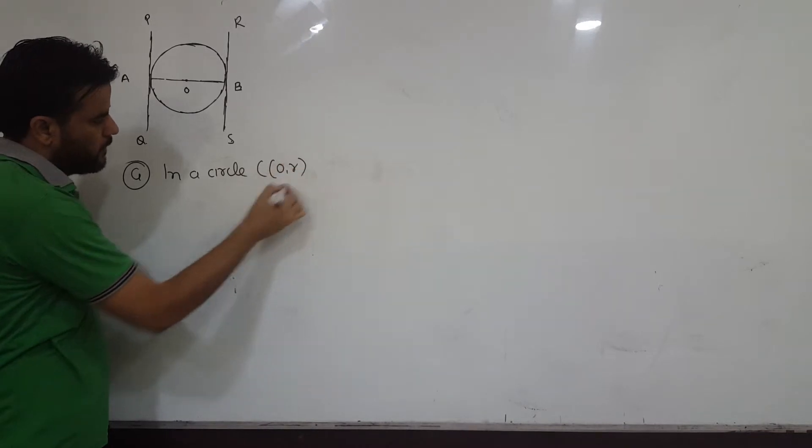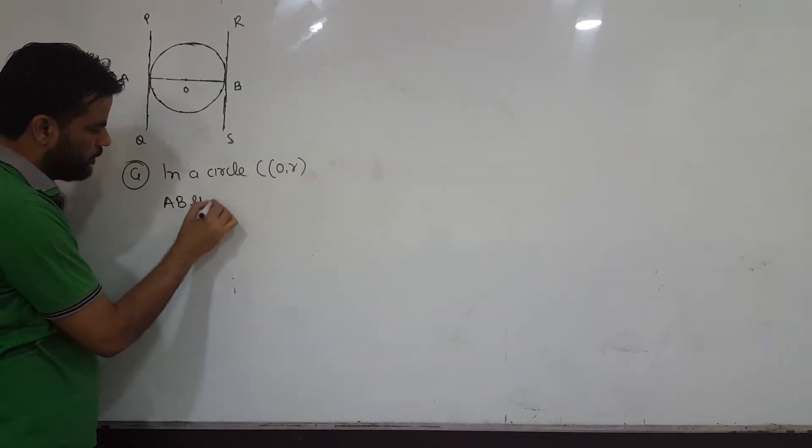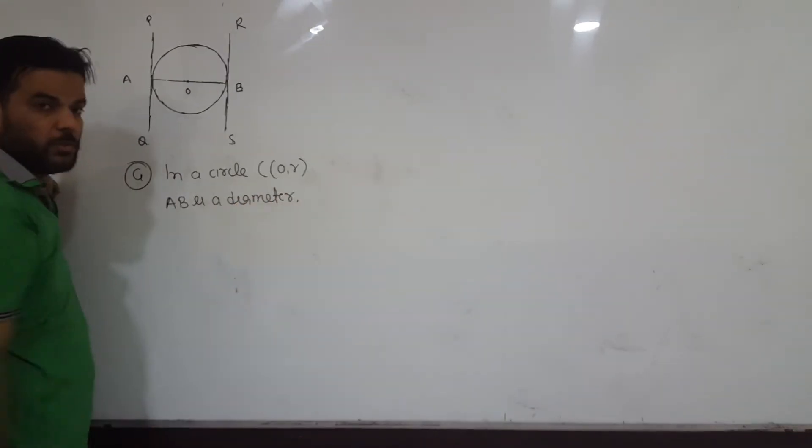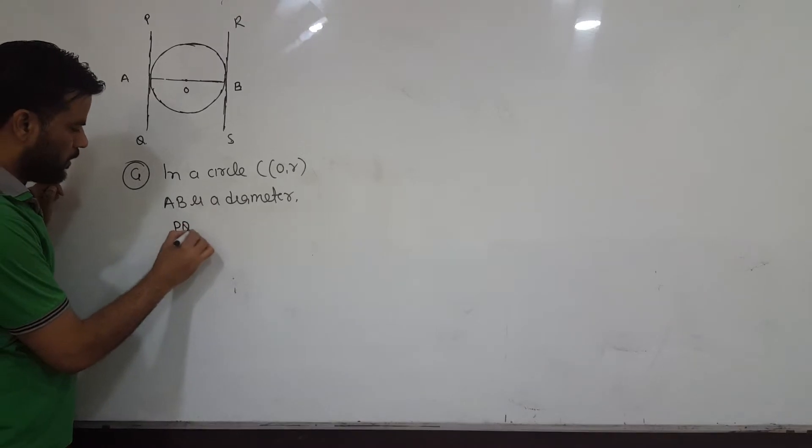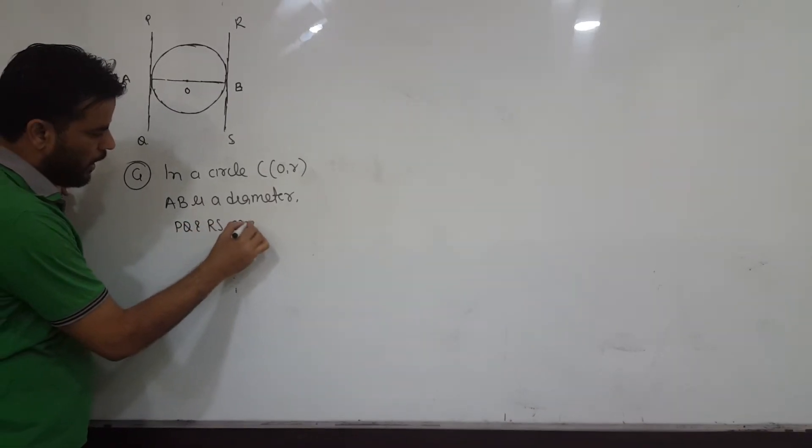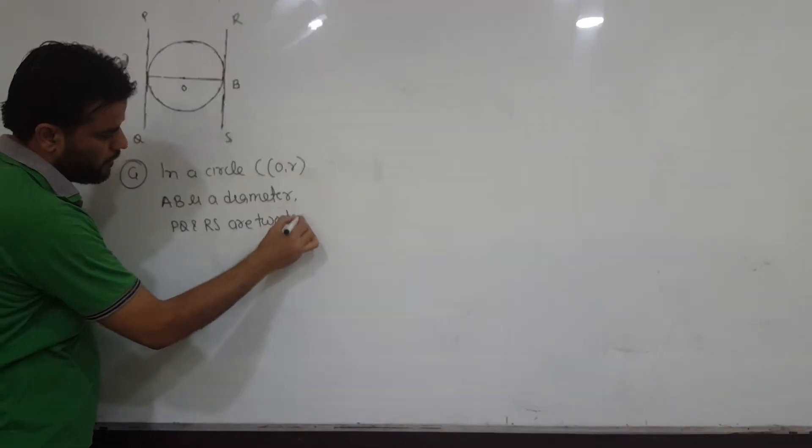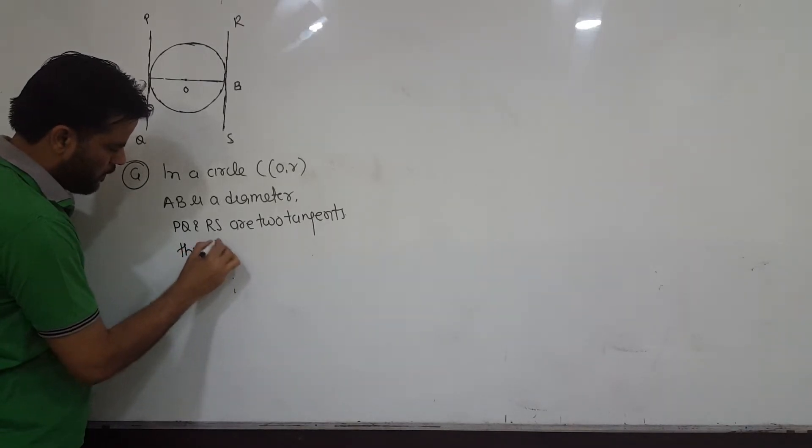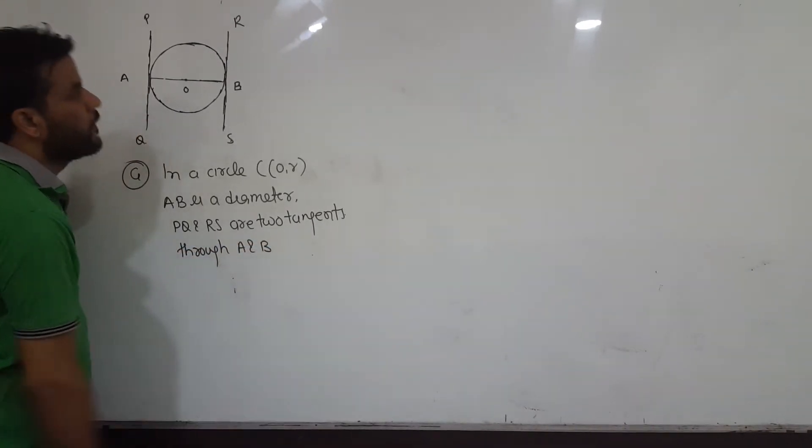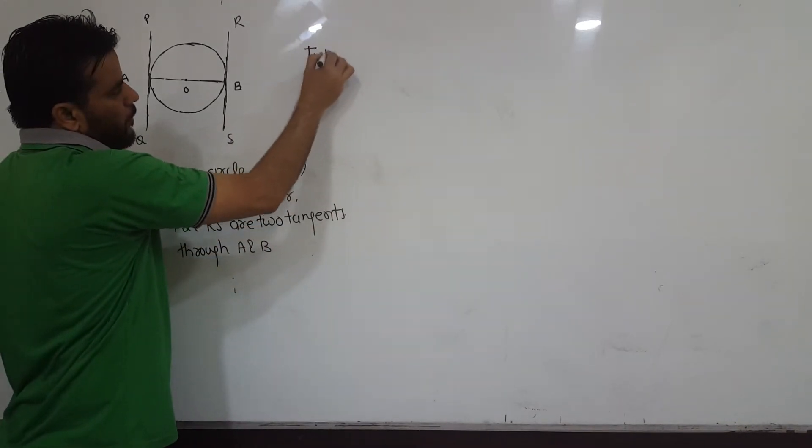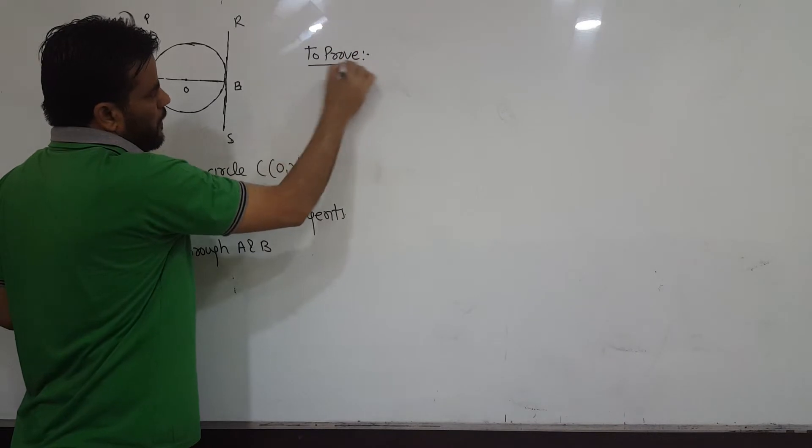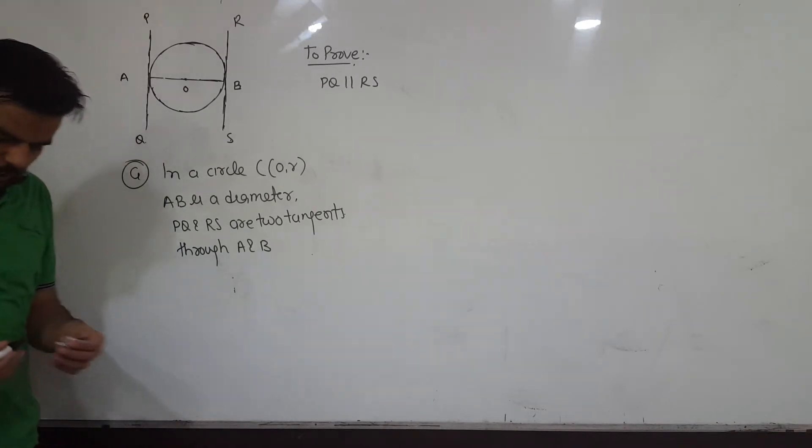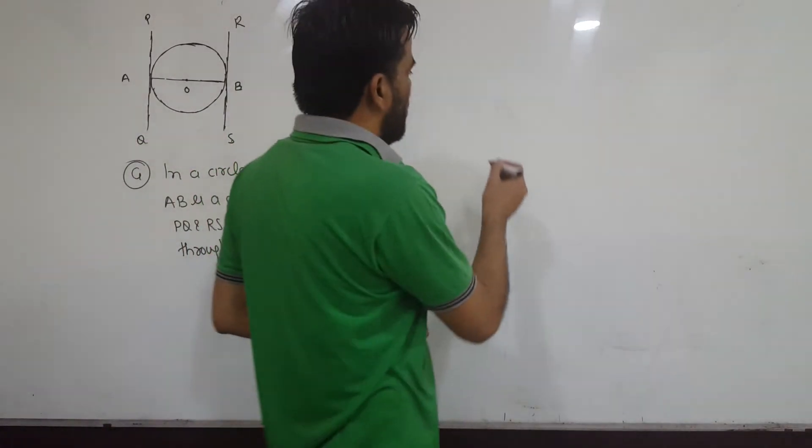So we need to show that AB is a diameter, and PQ is parallel to RS. Okay, now please look here. Whenever we have to prove lines are parallel...